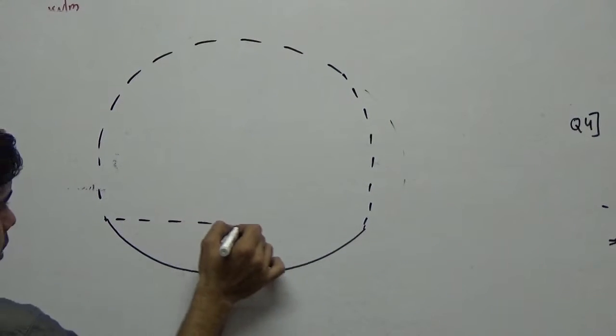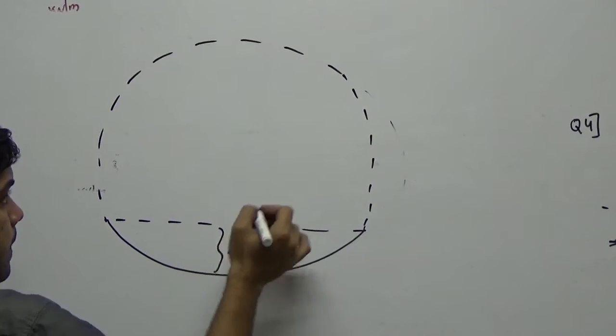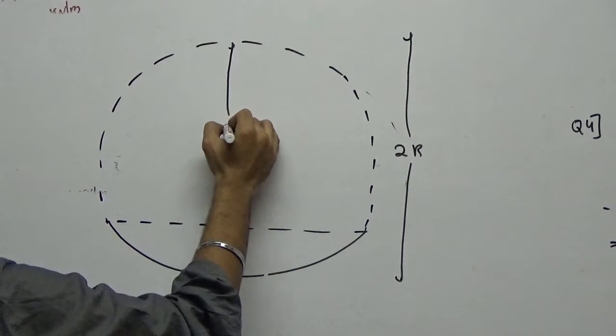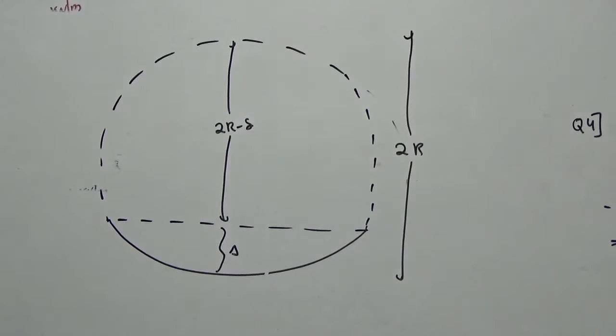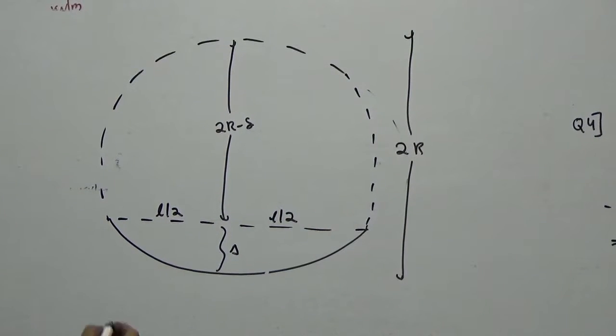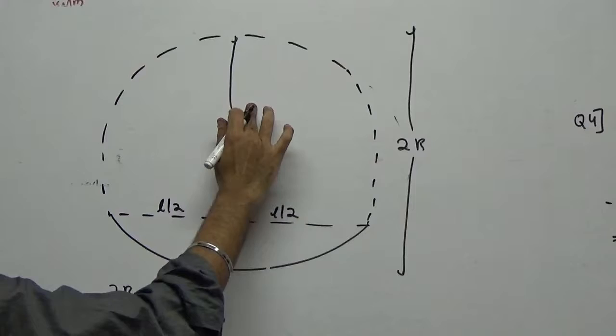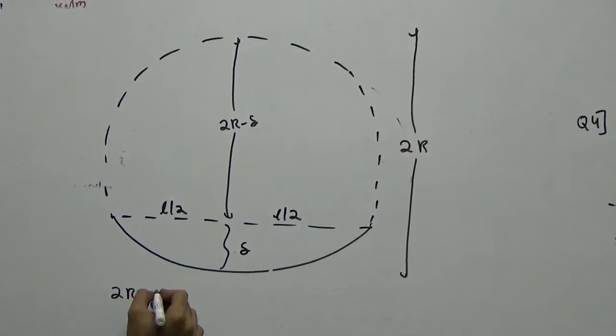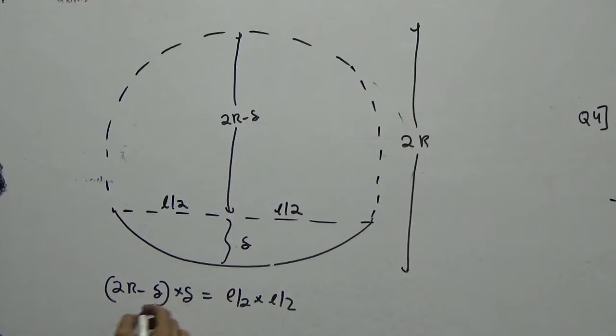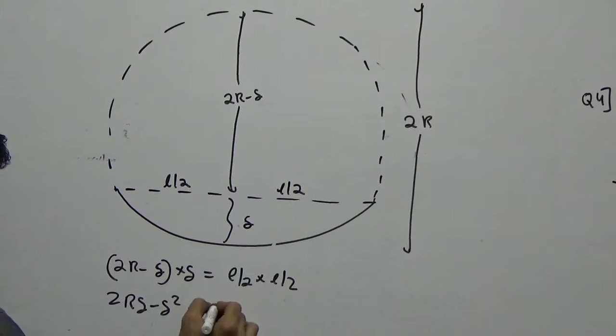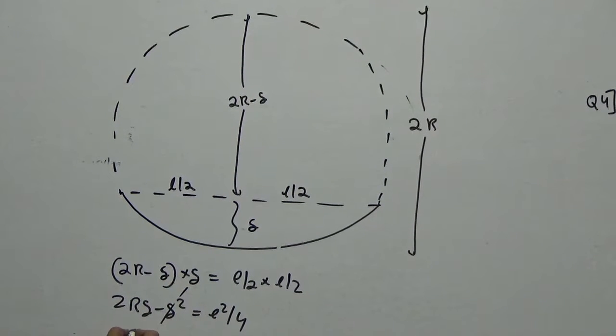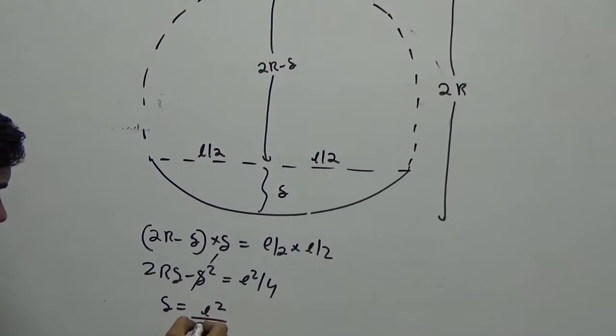So right now this is your beam, this is your delta. I can say this is 2R. If this is 2R, can I say this is 2R minus delta? Now this total span is L. You have this as L by 2 and this as L by 2. Can I write like this 2R minus delta into delta is equal to L by 2 into L by 2. So you have 2R delta minus delta square is equal to L square by 4. Delta is a small value. So delta square also will be a very small value. So your delta value is L square upon 8R.